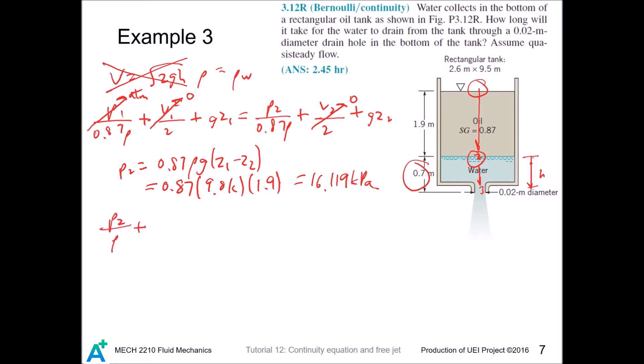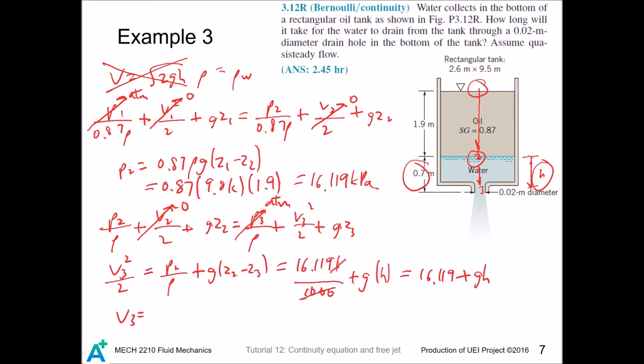For points 2 and 3 we can also write Bernoulli. Point 2 is in a large reservoir so it has nearly zero velocity. Point 3 is exposed to atmosphere so it also goes zero. We're left with p2/ρ + gz2 = gz3. We plug in the values and the elevation difference between points 2 and 3 is defined as h, so we have v3 = √(2(p2/ρ + gh)). This is our desired relationship.